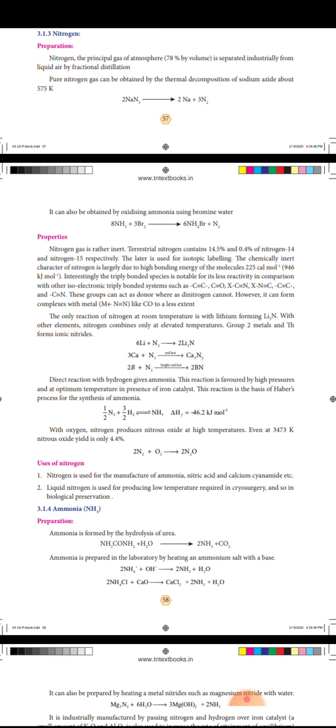C≡N, N≡C, and others. These groups can act as donors whereas dinitrogen cannot.